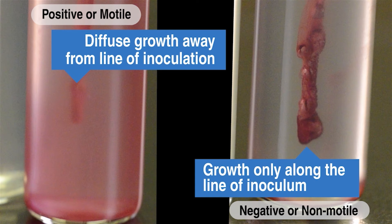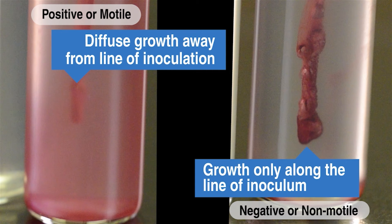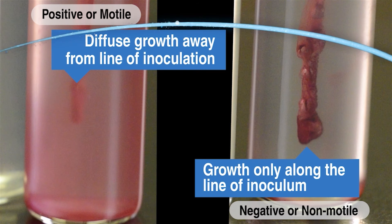For TTC media, a positive test for a motile organism is indicated by a red turbid area that extends away from the line of inoculation and turbid media. If there is red growth only along the line of inoculum and the media is clear around it, then the test is negative for a non-motile organism.